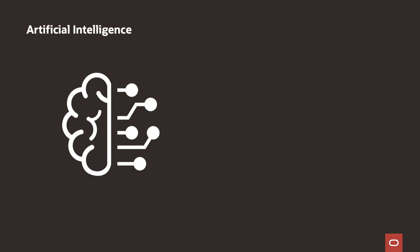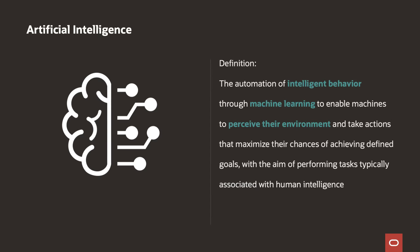Artificial intelligence is the automation of intelligent behavior through machine learning to enable machines to perceive their environment and take actions that maximize their chances of achieving defined goals, with the aim of performing tasks typically associated with human intelligence.